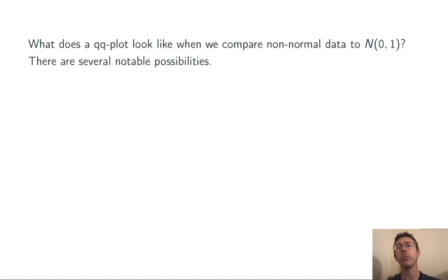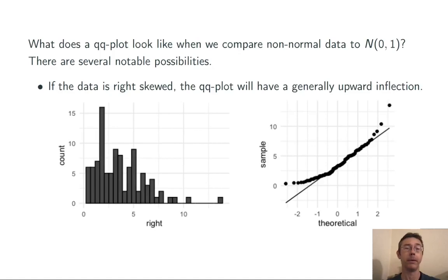What does a QQ plot look like when we compare non-normal data to N(0,1)? I want to point out several notable possibilities.